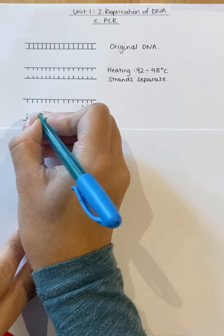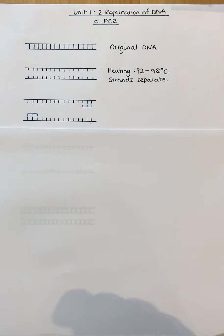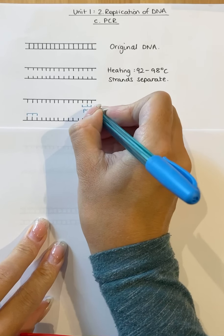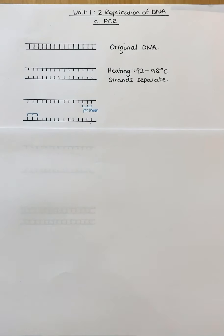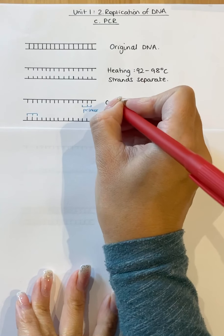Now the primers bind to each end of their specific target sequences. So this shows a primer. I'm using the same colors as I did for the previous example in the previous video, just to show you. So this involves cooling.